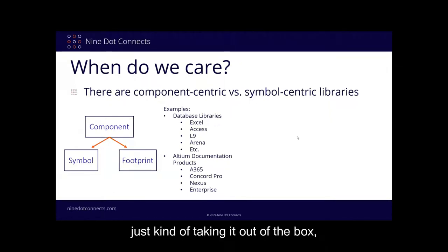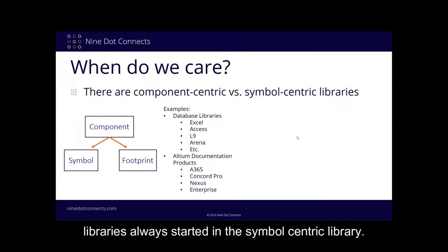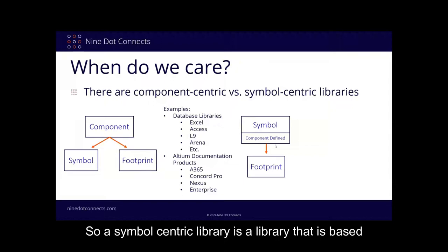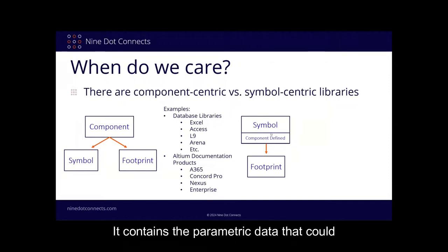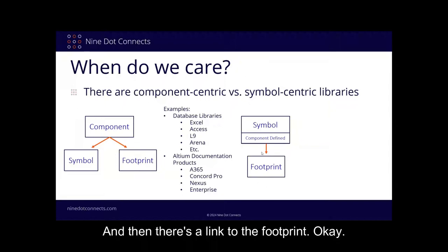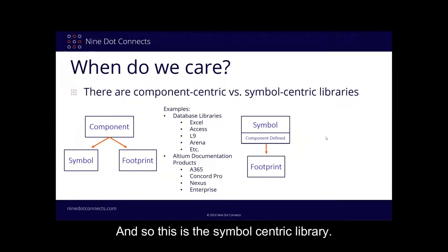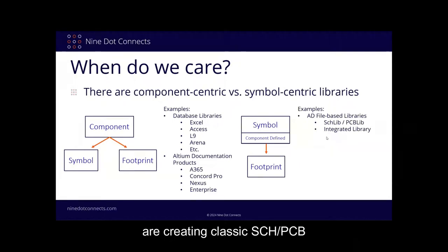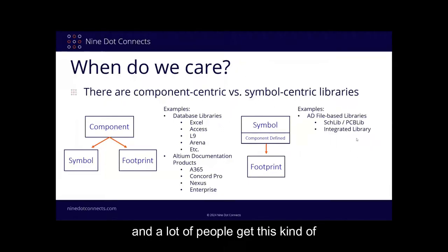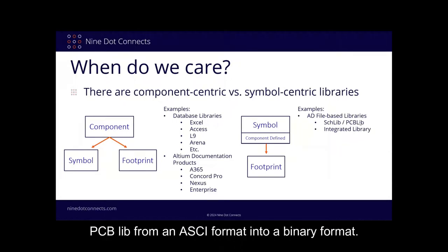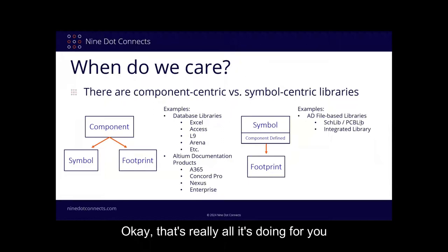If you're new to Altium or old school where libraries always started as symbol centric, this is what a symbol centric library looks like. A symbol centric library is based on an SCHLib file. It contains the graphic, the parametric data defining the component — like the component name, manufacturer's name, and associated parametric data — plus a link to the footprint. You'll find these when creating classic SCH/PCB libraries. An integrated library is simply compiling your SCHLib and PCBLib from ASCII format into binary format — one file rather than two separate files.